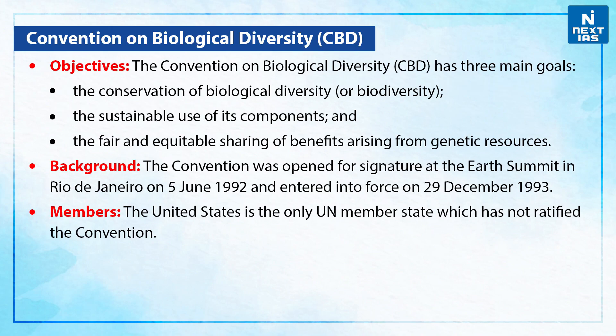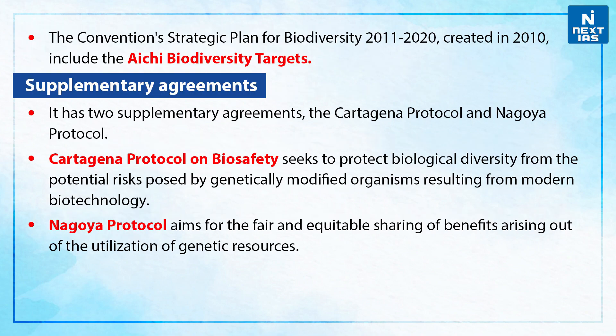Let's see the objectives. The Convention on Biological Diversity has three main goals: the conservation of biodiversity, the sustainable use of its components, and the fair and equitable sharing of benefits arising from genetic resources. The convention was opened for signature at the Earth Summit in Rio de Janeiro on 5 June 1992 and entered into force on 29 December 1993. The United States is the only UN member state which has not ratified the convention. The Convention's strategic plan for biodiversity 2011–2020, created in 2010, includes the Aichi Biodiversity Targets.